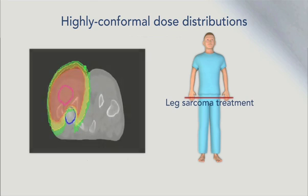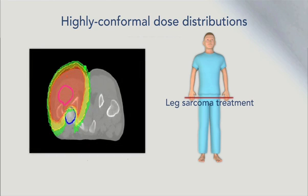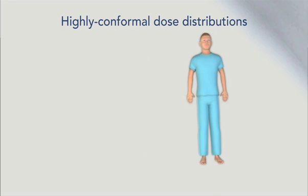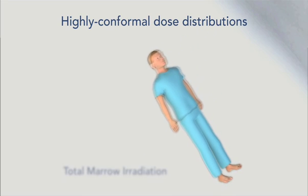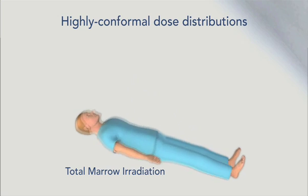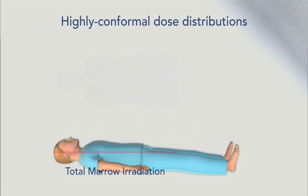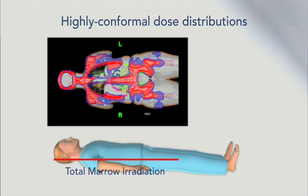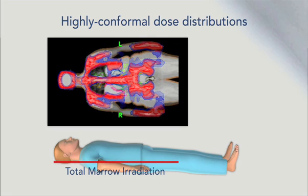In this leg sarcoma case, keeping the high-dose region away from the right femur was a key objective. A technique known as total marrow irradiation, or TMI, can be used as preparation for a bone marrow transplant.